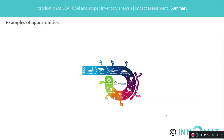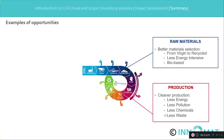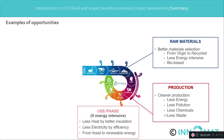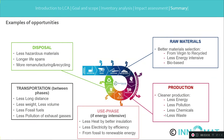At the end of this module on LCA, I would like to summarize what you might do with LCA. You have five areas of opportunities to create a more sustainable world. First, raw materials, where material selection is paramount — the switch from virgin to recycled, or to less energy-intensive or more bio-based materials. Second is cleaner production, with less energy, less pollution, less chemicals, and less waste. Third is the use phase, with less heat by better insulation, less electricity by more efficiency, and a shift from fossil to renewables. The fourth is transport: shorter, less weight, less volume, less fossil fuels, and less pollution from exhaust gases. The fifth and last is disposal: less hazardous materials, longer product lifespans, and more remanufacturing and recycling.